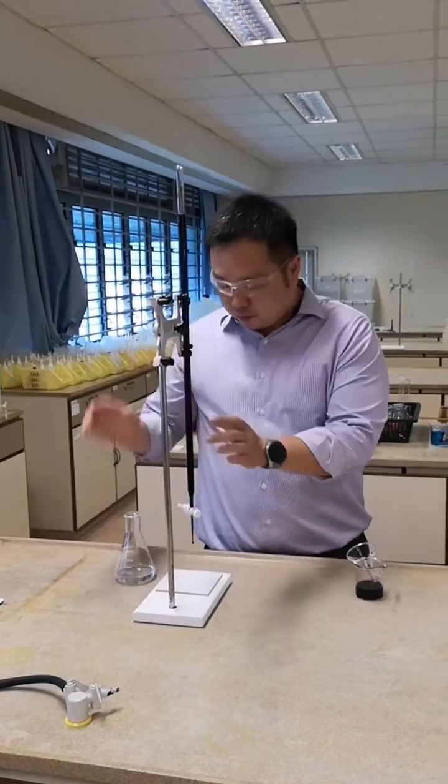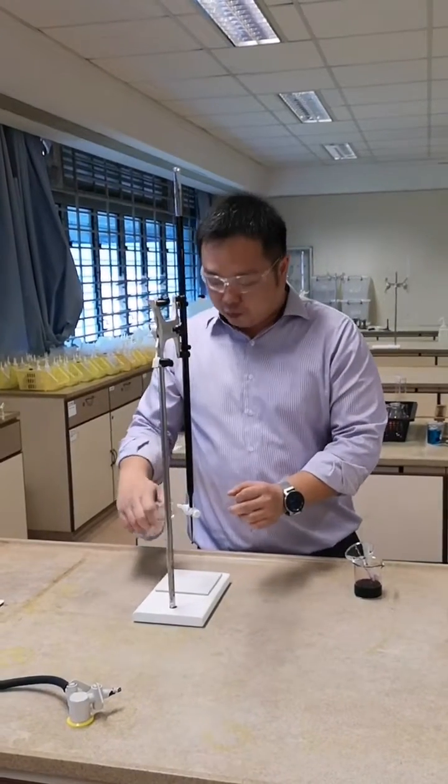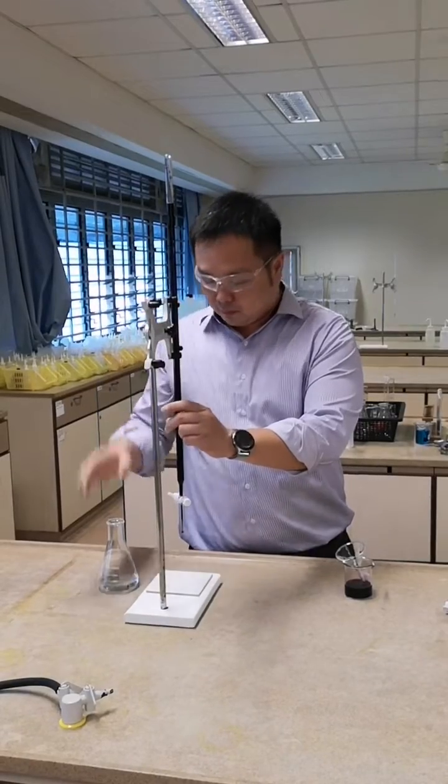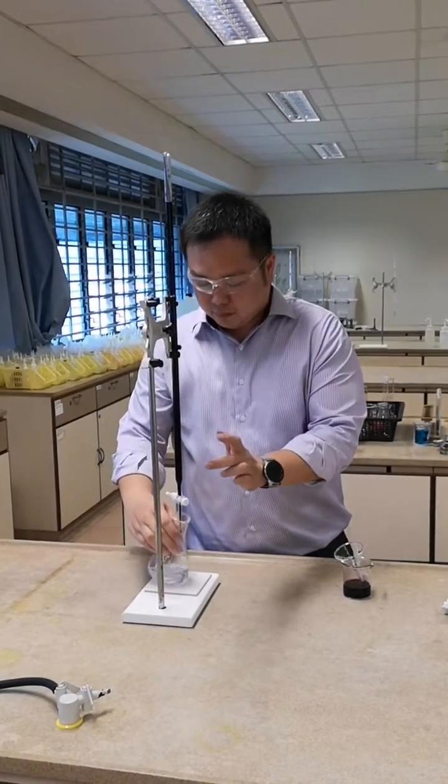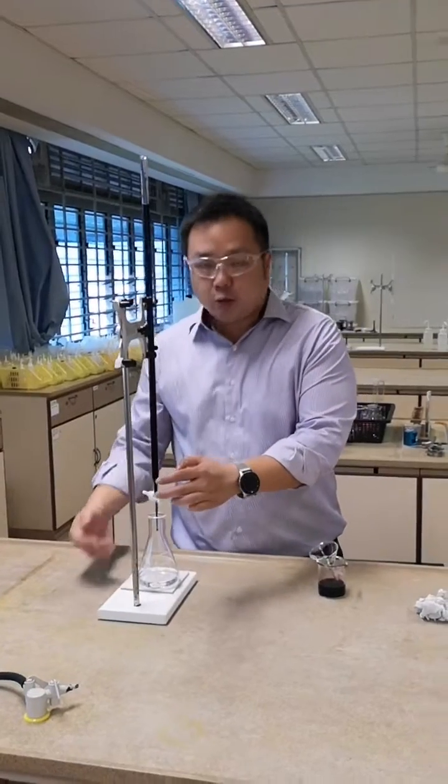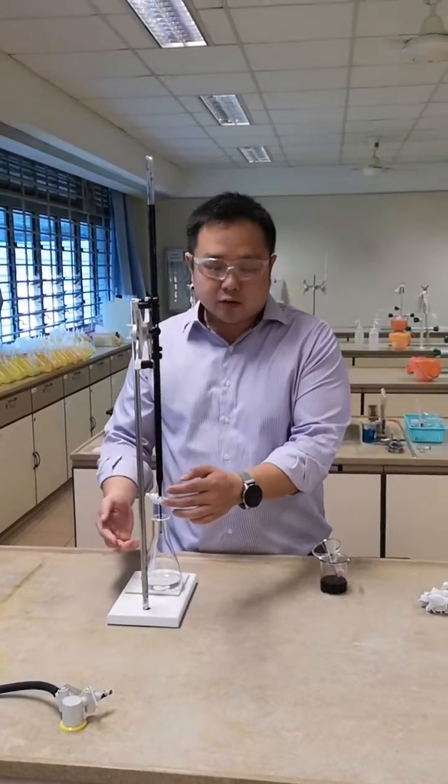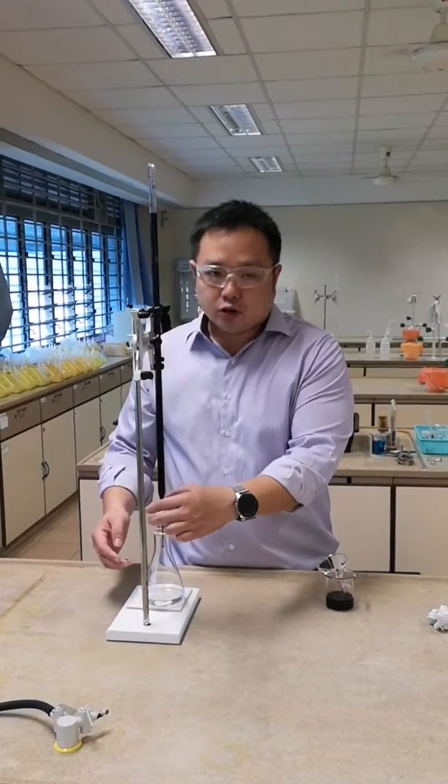Before you start the titration, reminder again to remove the filter funnel from the burette top. As a rule of thumb, it's best that you can swirl as you do the titration. It will be good if you can use your master hand to swirl and your non-master hand to control the tap.